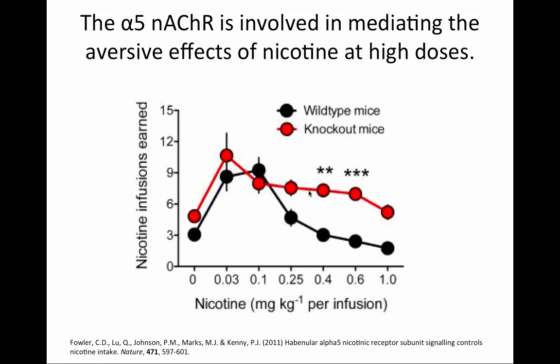Here is data showing that genetic deletion of the alpha-5 subunit maintains nicotine consumption even at high nicotine concentrations, suggesting that the adverse properties of nicotine are mediated by the alpha-5-containing nicotinic receptors. Nicotine consumption follows an inverted U-shape as represented by the black line in the wild-type mice. Once the concentration gets too high, the mice reduce their consumption and eventually stop. In the alpha-5 subunit knockout mice in red, these mice do not show this normal inverted U-shape behavior and continue to respond for nicotine even at very high doses where the wild-type mice have already stopped responding.